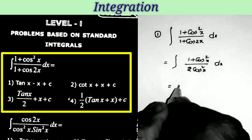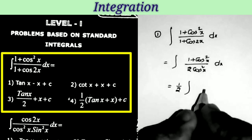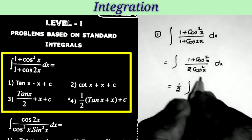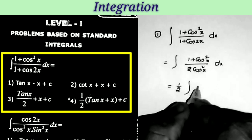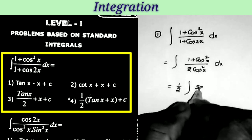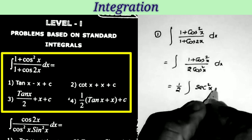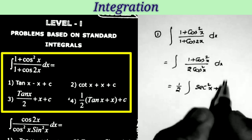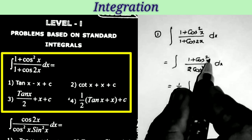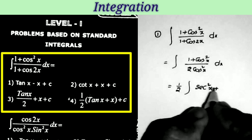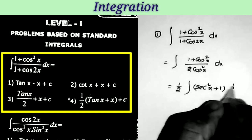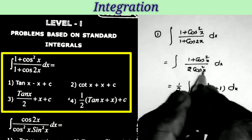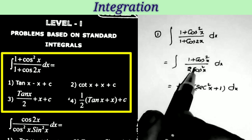This equals writing the constant before the integration: 1/2, now separating the denominator. 1/cos²x is equal to sec²x. cos²x divided by cos²x equals 1.